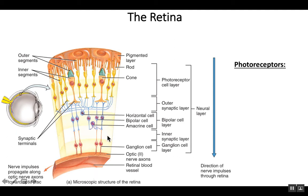The neuron layers to look at would be the ganglion cells. Light travels through them, then through another layer of different neurons, primarily the bipolar cells. Then it hits rods and cones — the photoreceptors. So light travels this way through the retina.